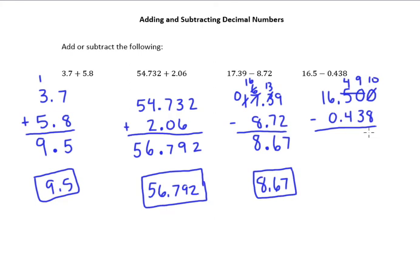So we get 10 minus 8 is 2. 9 minus 3 is 6. 4 minus 4 is 0. Drop my decimal point down. 6 minus 0 is 6. And 1 minus 0 is 1. So our answer here is 16.06.